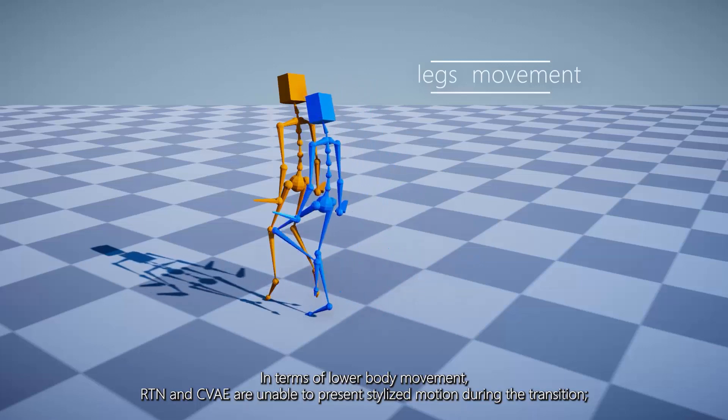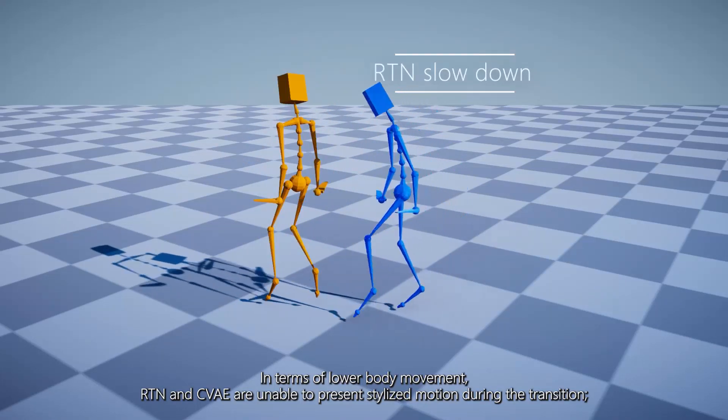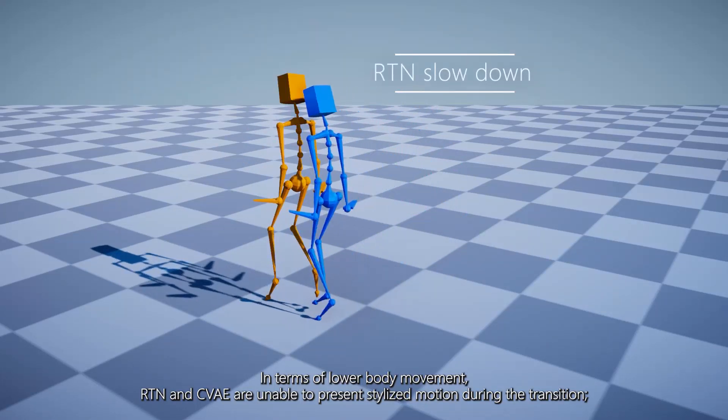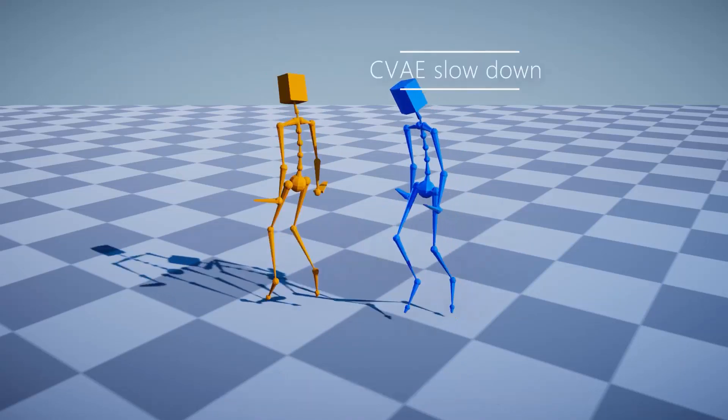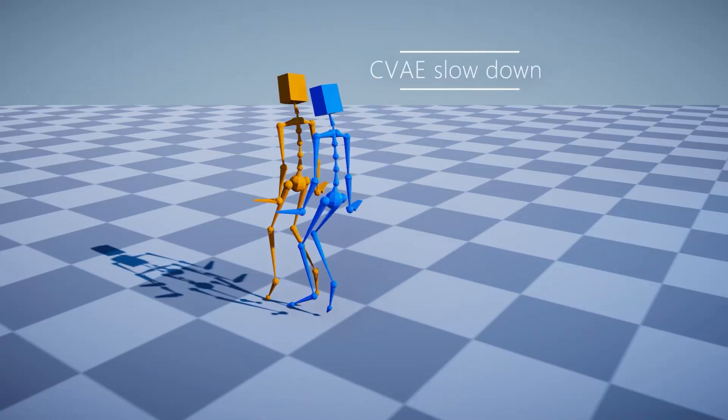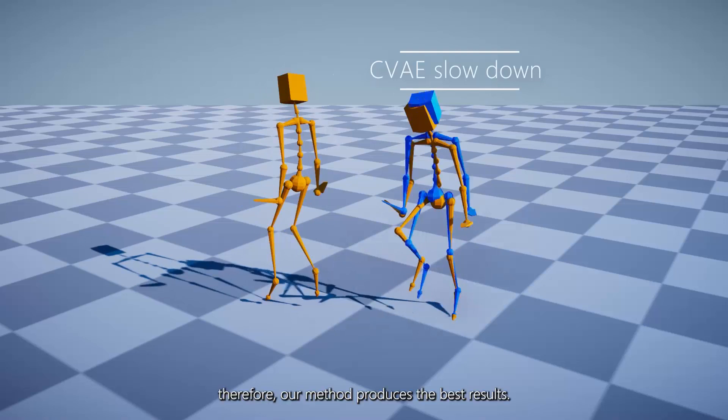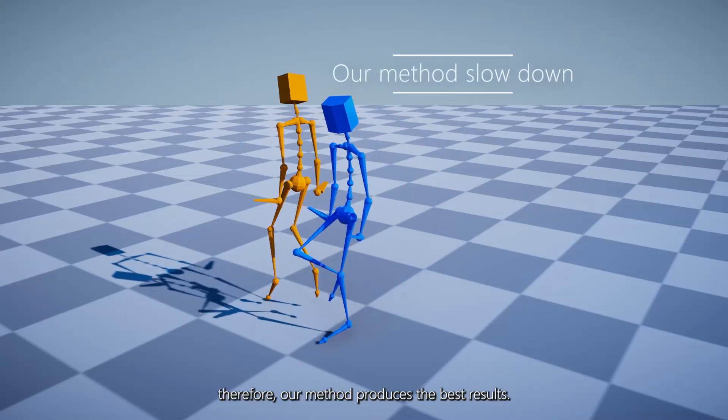In terms of lower body movement, RTN and CVAE are unable to present stylized motion during the transition. Therefore, our method produces the best results.